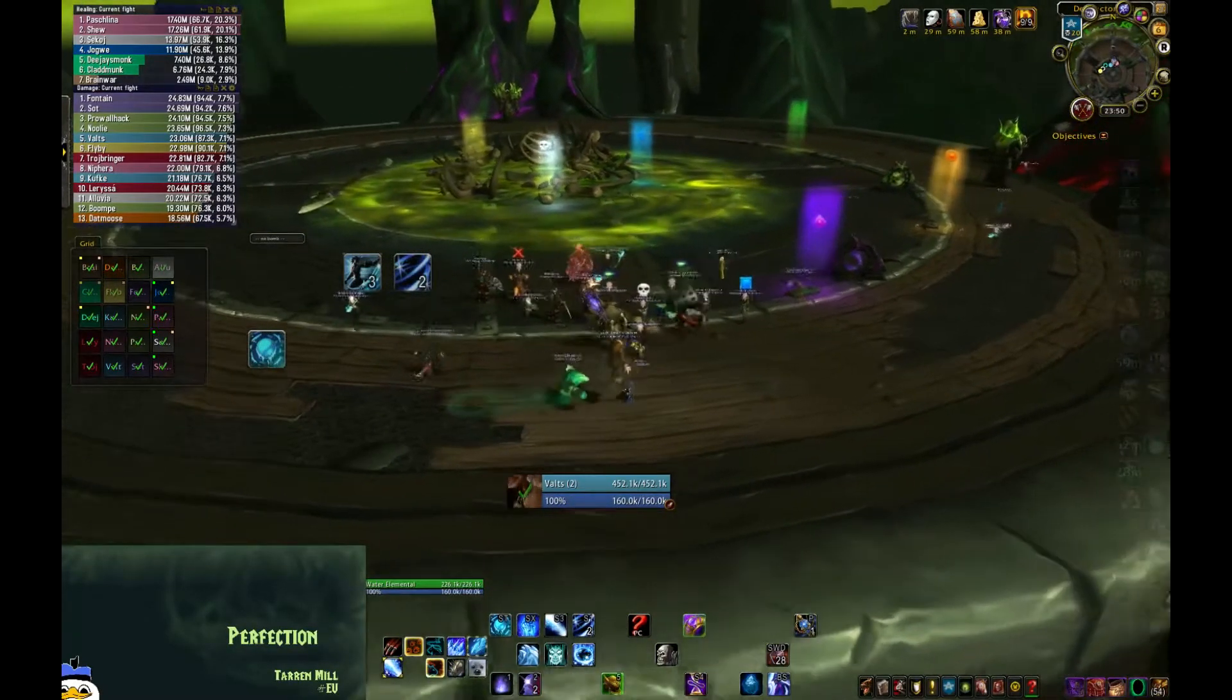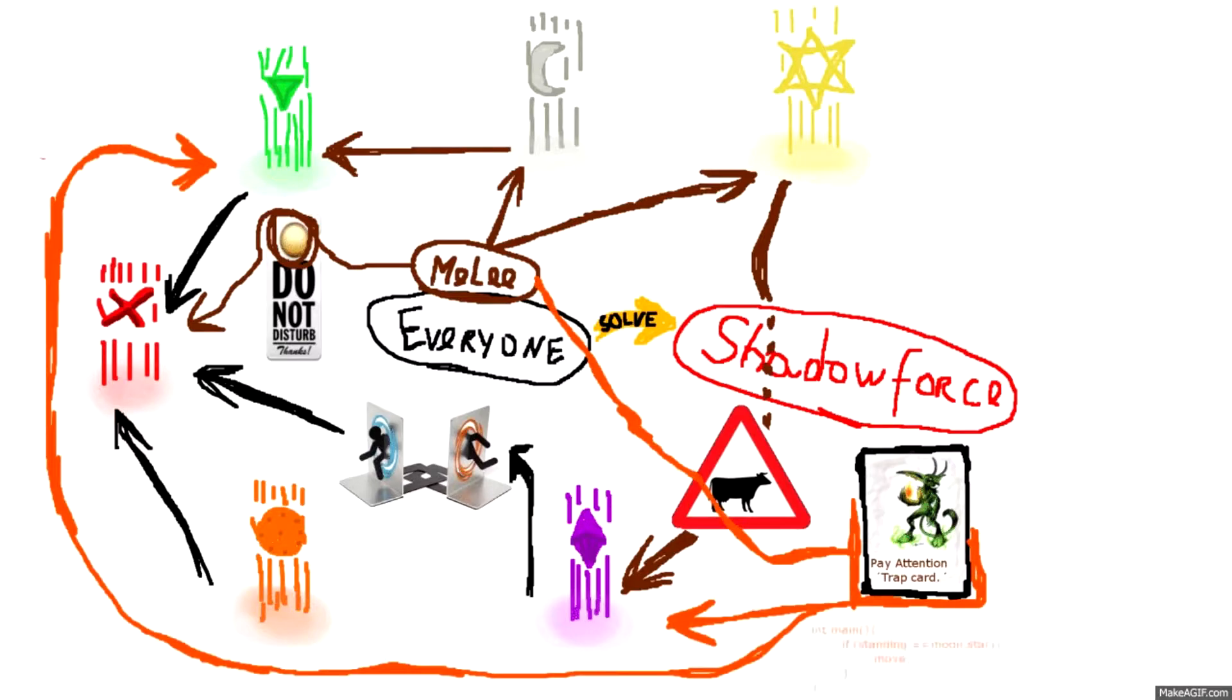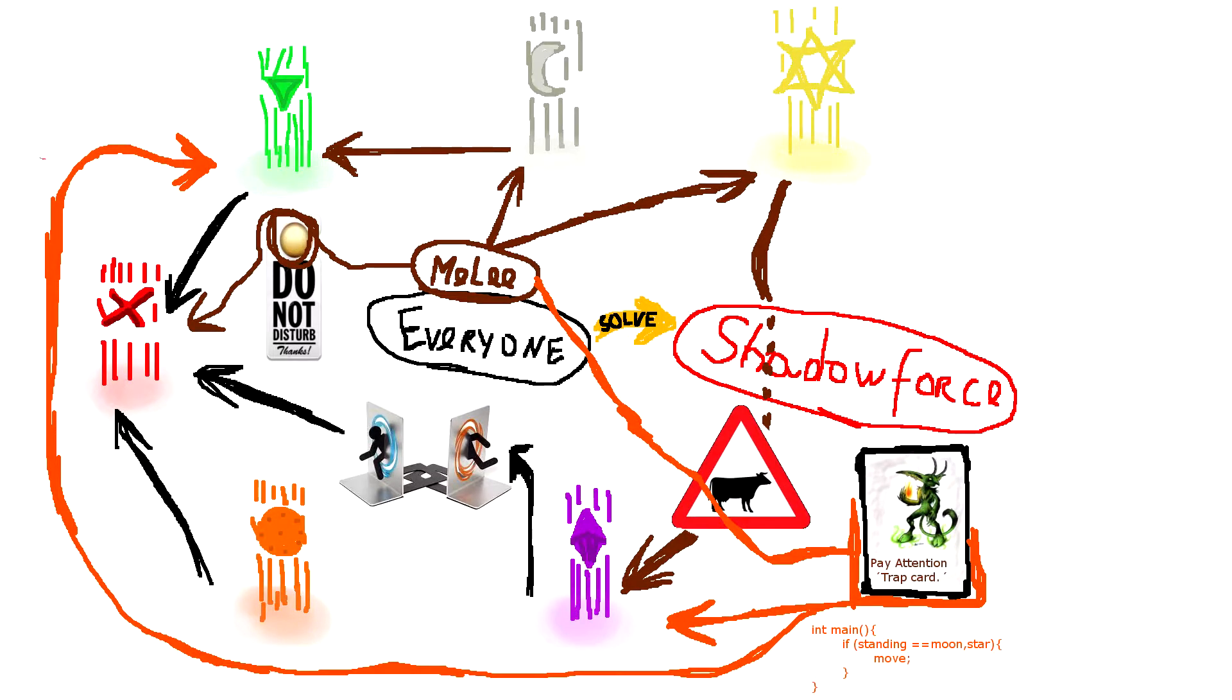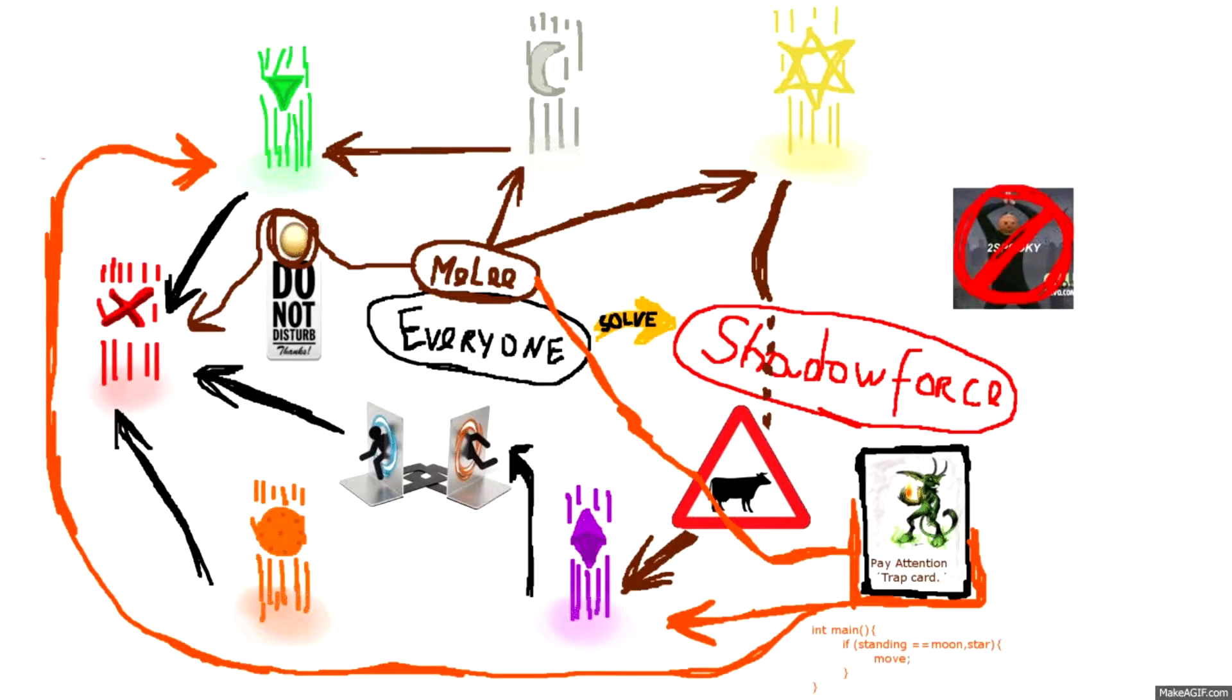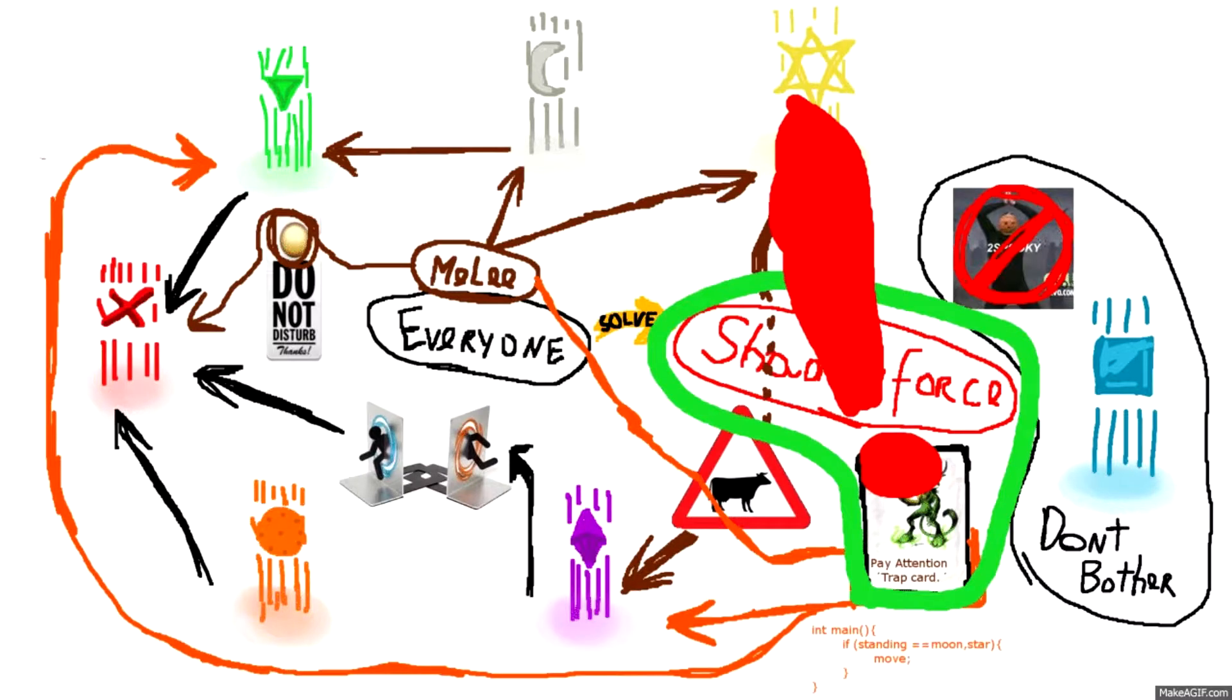So you as melee, you don't even need to bother about the red one. Just make sure to pay attention to the purple and the green pillar whenever you be standing on moon or star. And you won't get feared, so you don't need to bother to go to blue when the fear is coming. You just need to pay attention to the Shadow Force.